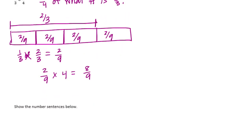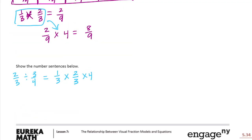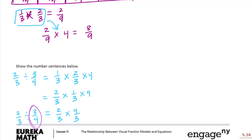Now we connect the model to the invert and multiply method. We started with two-thirds divided by three-fourths, which equals one-third times two-thirds, then multiplied by four. Using the commutative property, we rearrange to two-thirds times one-third times four. Multiplying one-third times four gives four-thirds, so we get two-thirds times four-thirds. This shows the invert and multiply rule: take the divisor three-fourths, flip it, and multiply instead.